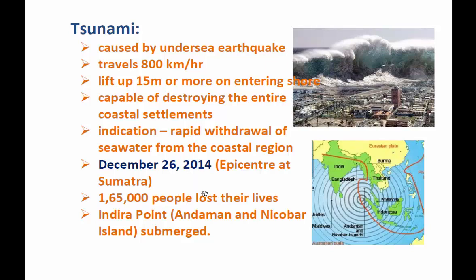As an example, on December 26, 2004, a tsunami occurred whose epicenter was in Sumatra, Indonesia. On the map we can see exactly where the epicenter was. During this tsunami, around 165,000 people lost their lives, especially those living near the coastal regions in areas including India, Burma, and Thailand — the whole region was destroyed by this tsunami.